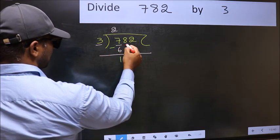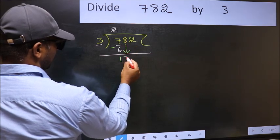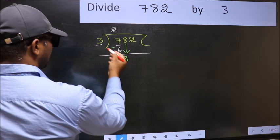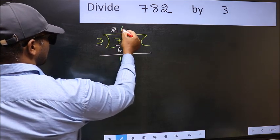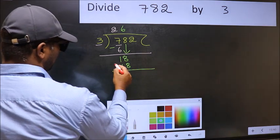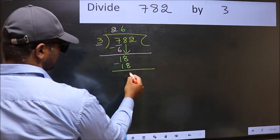After this, bring down the beside number. So, 8 down. Now, 18. When do we get 18 in 3 table? 3 times 6 is 18. Now you should subtract. 18 minus 18 is 0.